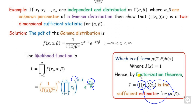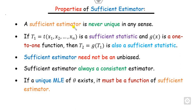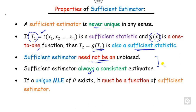In conclusion, the sufficient estimator is never unique, because if T is sufficient and g is a one-to-one function, then g(T) is also a sufficient estimator. The sufficient estimator need not be unbiased, but it is always consistent. If you find the unique MLE, that is called the UMVE — it must be a function of the sufficient estimator. So all estimators where the UMVE exists are also sufficient estimators.